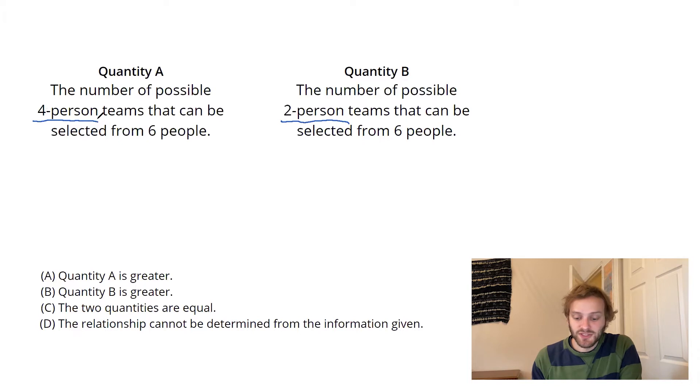When you're doing combinatorics, the first thing to do is make little slots for each choice you're going to make. So here I need to pick two people, so I'm going to make two slots.